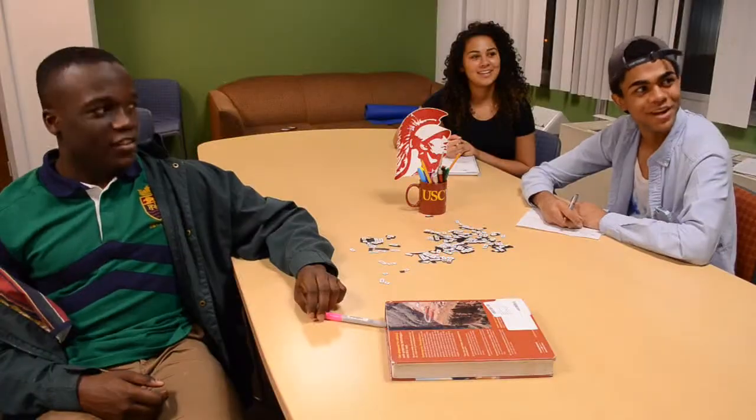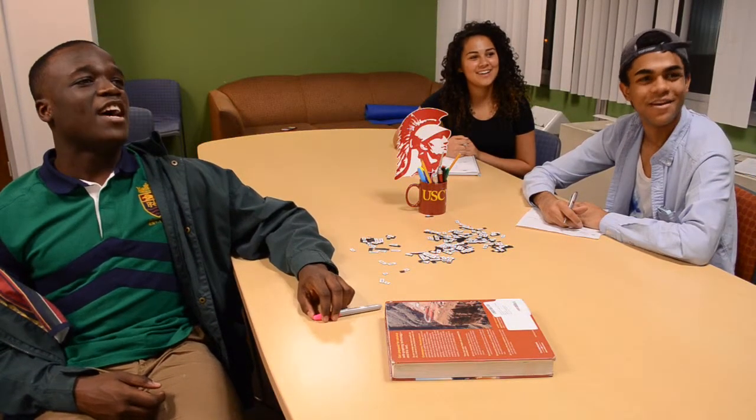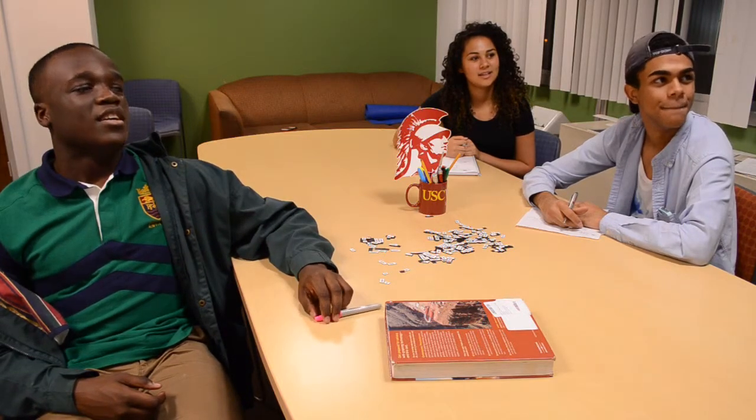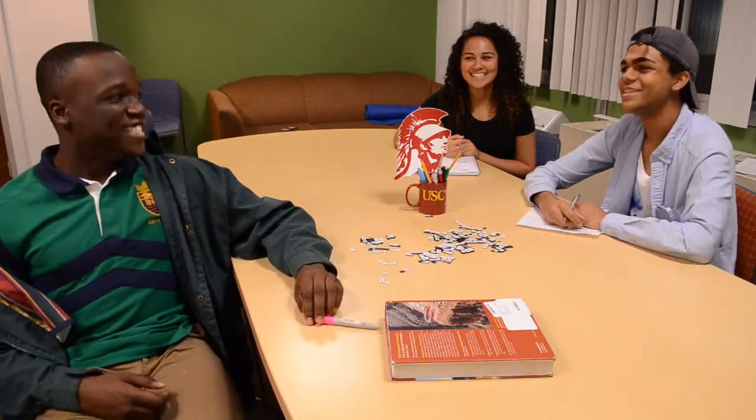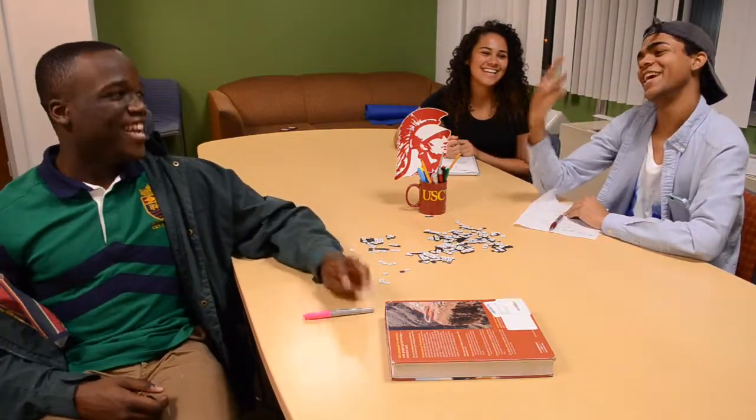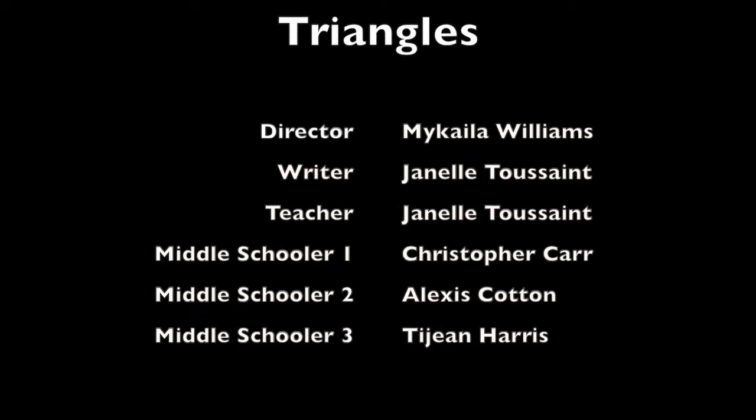So, to remember the things that you have in our lesson, we made a song to Three Blind Mice. So, it goes: three equal sides, three equal sides, equilateral triangles have three equal sides. Okay? Everyone can join with me and then everyone can do it by themselves. Three equal sides, three equal sides, equilateral triangles have three equal sides. Good. Now, your turn by yourselves. Ready? One, two, three. Three equal sides, three equal sides, equilateral triangles have three equal sides.